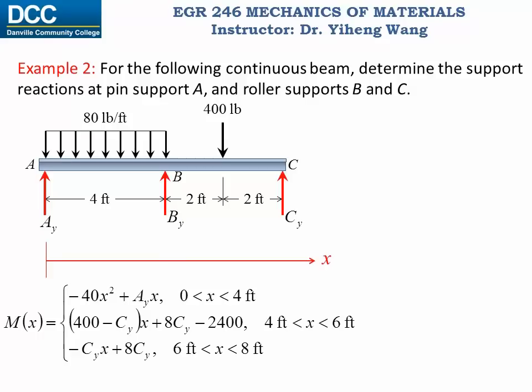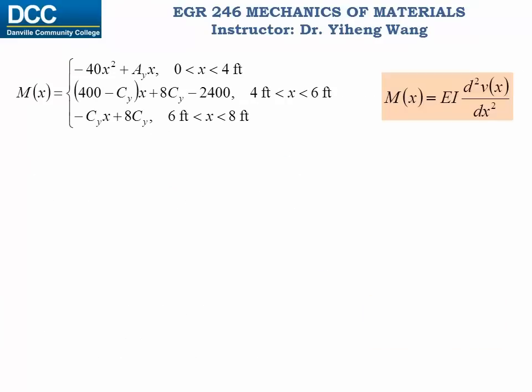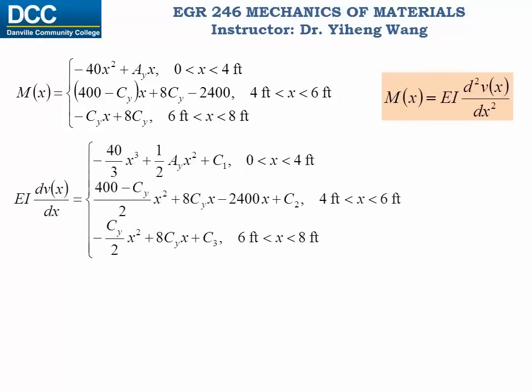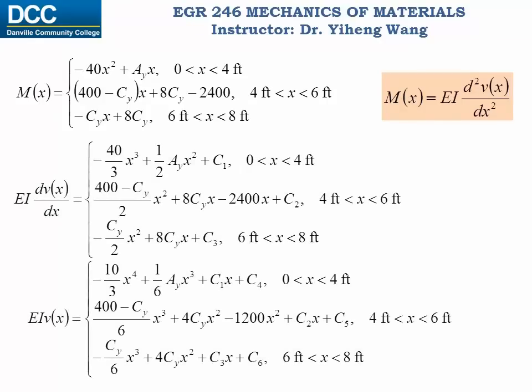We need to integrate the piecewise bending moment function twice in order to get the deflection function. The internal bending moment function is integrated once and again, and as you can see, six constants were inevitably generated during the integration process. These constants need to be evaluated through the boundary conditions and continuity conditions.